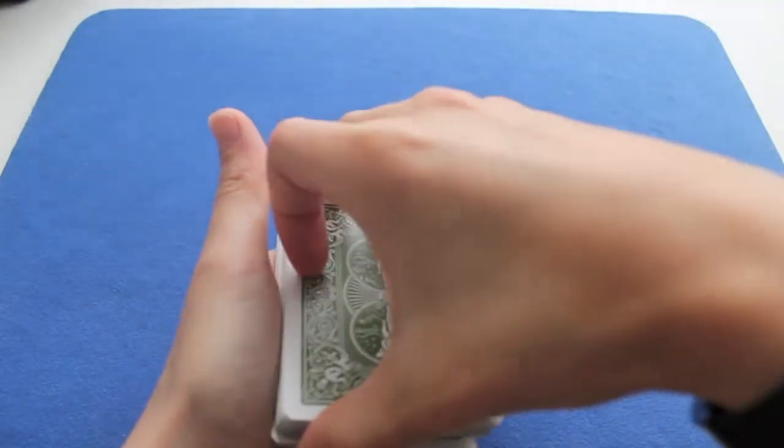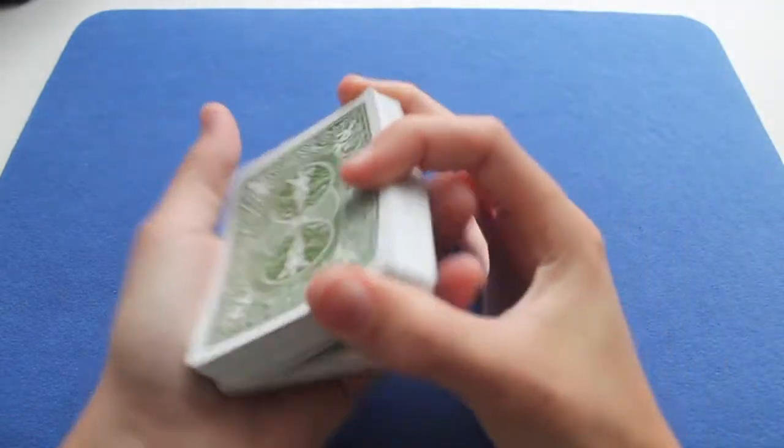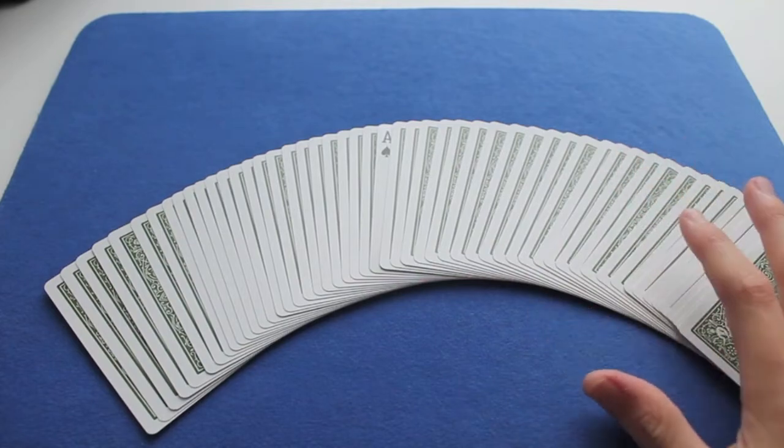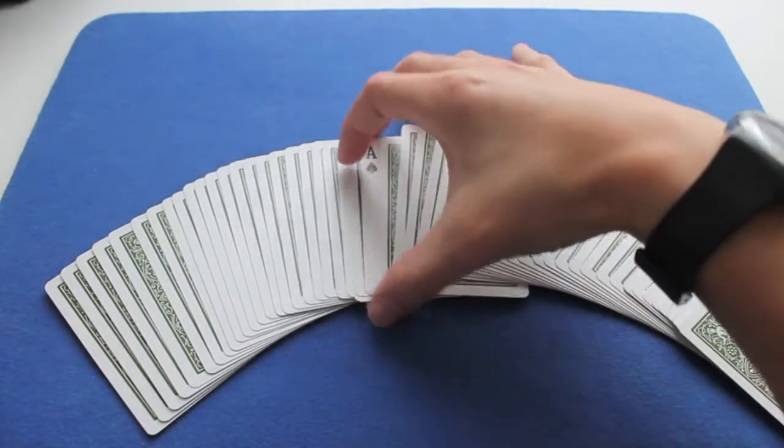Instead of just replacing it like this, you flip it over and leave it there, which makes it like this. All the cards go back to normal except for one card: the Ace of Spades.